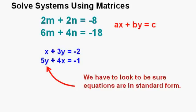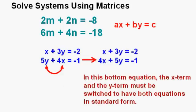You have to make sure that the terms above each other are like terms. For instance, if you have a system with the bottom equation having the y term first, 5y, you need to use the commutative property of addition and switch the places of the x and y terms to line up directly underneath the like terms in the top equation.